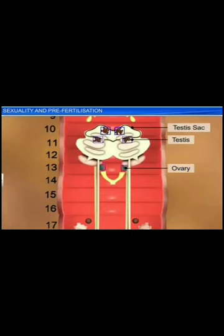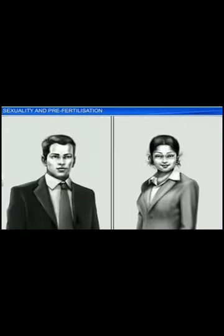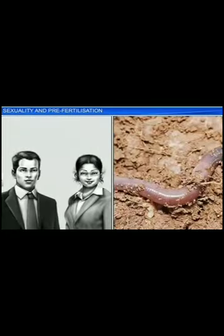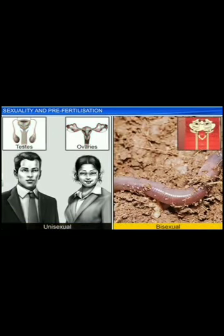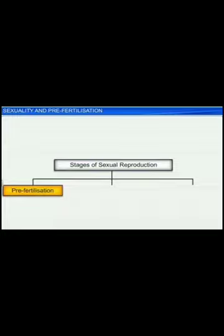The earthworm, which has both testis and ovary, is bisexual in nature. Did you know that bisexual animals are also called hermaphrodites? Human beings, on the other hand, are unisexual organisms as each individual possesses either the male or female reproductive organ. Regardless of whether organisms are unisexual or bisexual, reproductive structures play an important role in sexual reproduction — a process that is divided into three distinct stages: namely the pre-fertilization, fertilization, and post-fertilization stage.